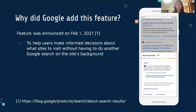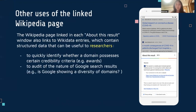So why did Google implement this feature? According to the feature announcement on February 1, 2021, the About This Result pop-up window was designed to help users make more informed decisions about what sites to visit without having to do another Google search on the site's background. But there are also other uses to this feature. With the Wikipedia page linked in each About This Result window, we can also access the corresponding Wikidata entries, which contain structured data that help researchers automate the process of identifying whether a site possesses a certain credibility criteria. Furthermore, the characteristics of a domain can be useful in auditing the nature of Google search results.